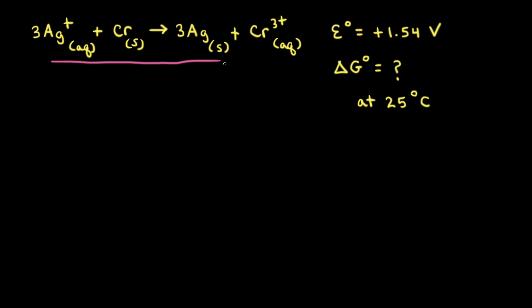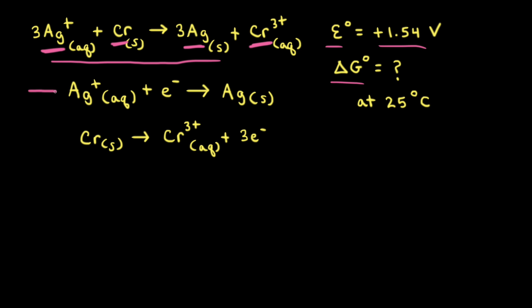For this redox reaction, E° = +1.54 volts and our goal is to calculate ΔG° at 25°C. In the redox reaction, silver 1+ is being reduced to solid silver, and solid chromium is being oxidized to chromium 3+. For the reduction half-reaction, silver 1+ gains one electron to form solid silver. For the oxidation half-reaction, solid chromium turns into chromium 3+ and loses three electrons.